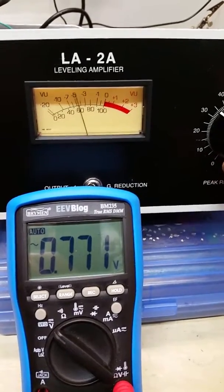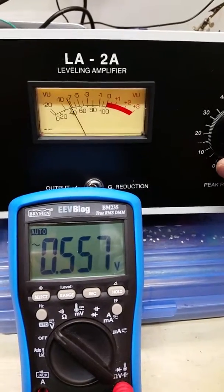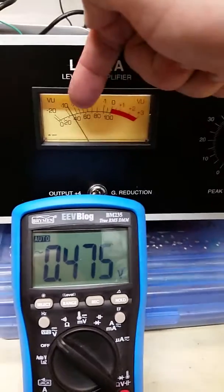The needle starts to drop. It's gain reduction that's applied. When it gets to about 10 on the needle...